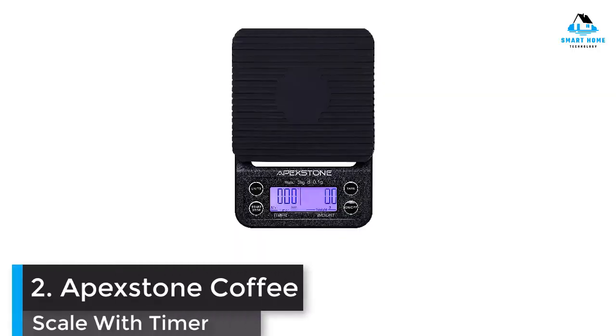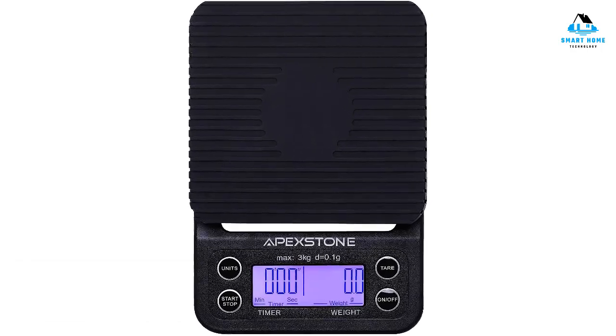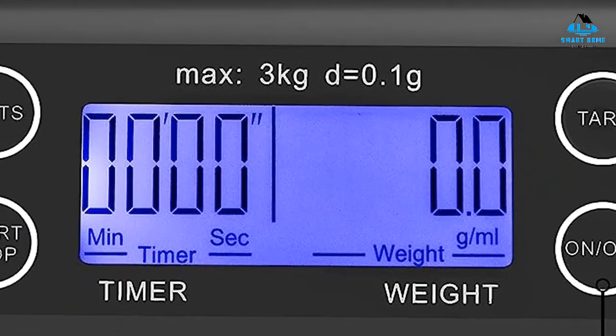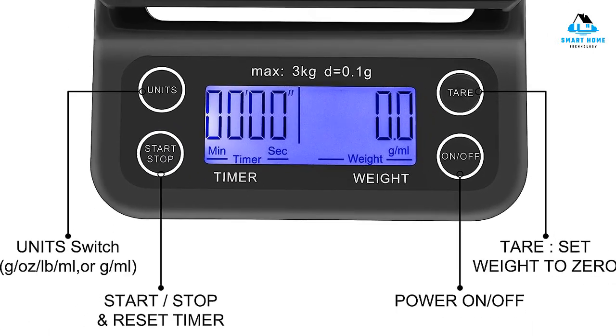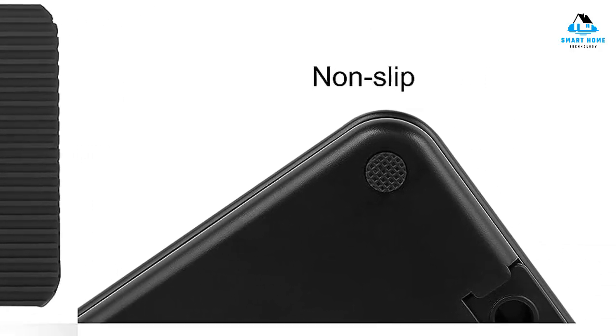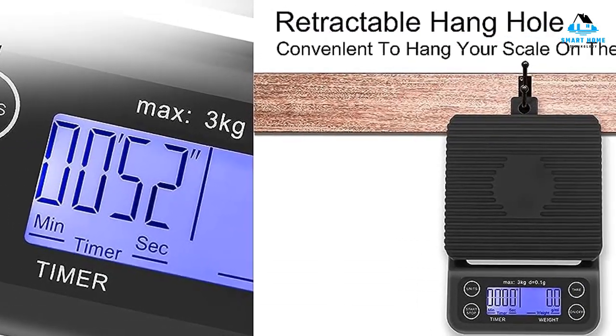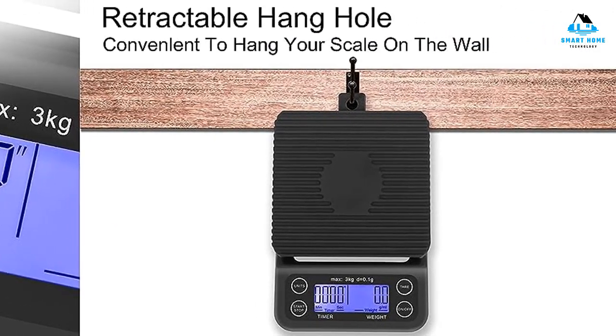Number 2. Apixtone Coffee Scale with Timer. For a wallet-friendly option, this coffee scale comes in for the win with a number of extras for a low price. Not only does it include a timer, but this scale also measures in a total of five different units. It has a max weight of 3,000 grams and can measure precisely to the 0.1 gram.